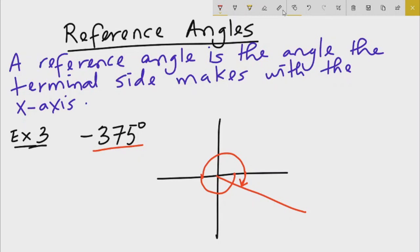The reference angle for this angle will be the angle theta that it makes above 360. To find the reference angle theta, we calculate 375 minus 360, which gives us 15 degrees.